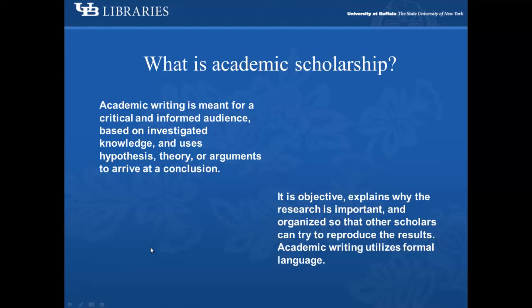Academic writing is meant for a critical and informed audience. It's based on investigated knowledge and uses hypothesis, theory, or arguments to arrive at a conclusion. It is objective, explains why the research is important, and organized so that other scholars can try to reproduce the results. Academic writing utilizes formal language.